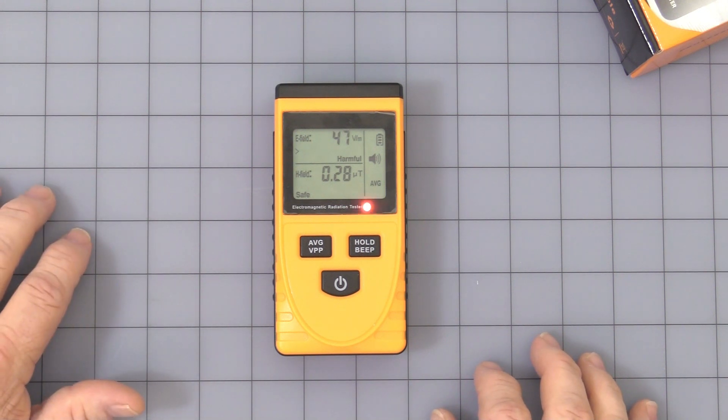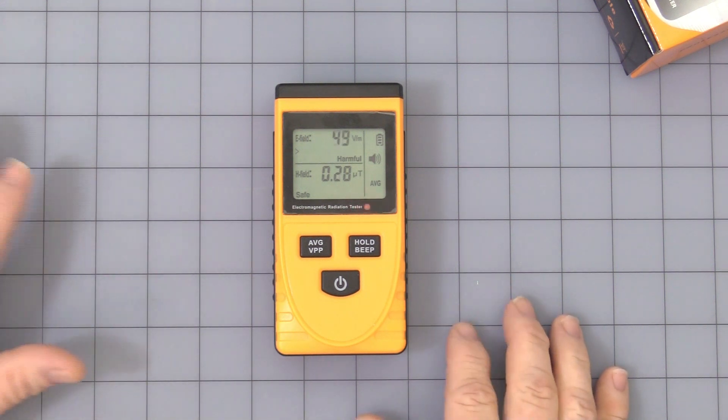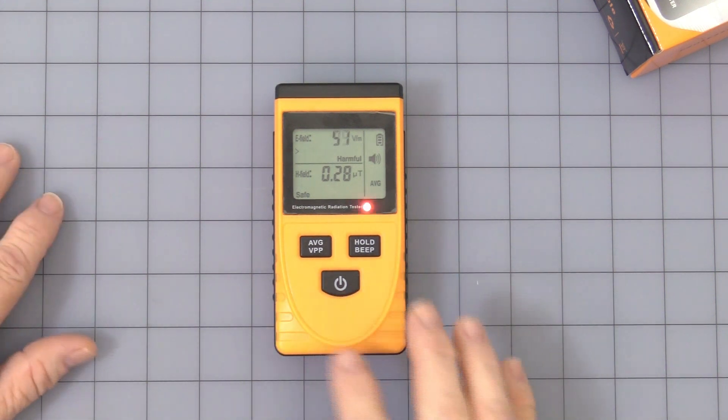Which is 40 volts per meter or 0.4 micro teslas. That is fixed; there is no adjusting that.